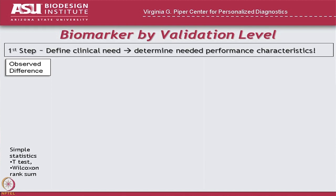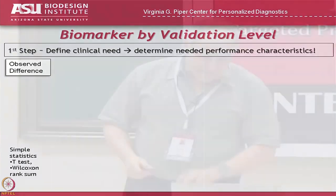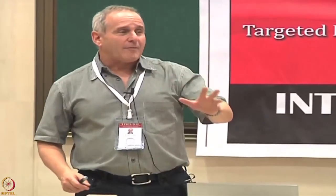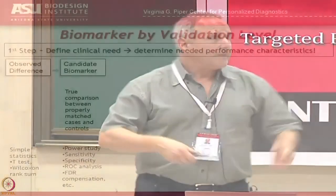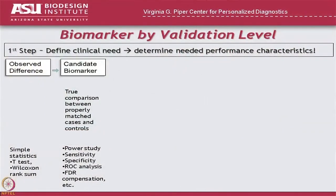So now, how do you go about getting a marker? The next step is to say: okay, I think I have a biomarker, now I need to do a larger-scale comparison. I have to look at more people. We would call that a candidate biomarker, and we'll do a comparison between properly matched cases and controls.